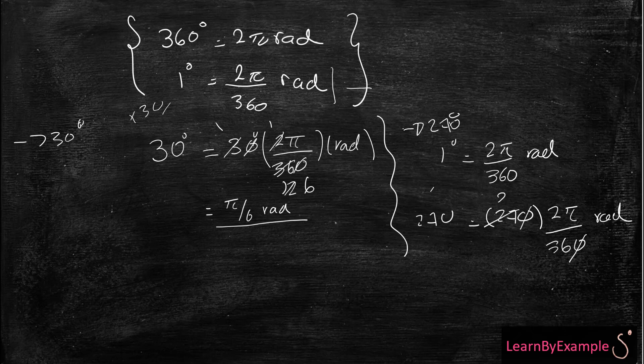27 divided by 9 is 3. 36 divided by 9 is 4. 2 divided by 2 is 1. 4 divided by 2 is 2. And I'm going to be left with 3π over 2 radians.